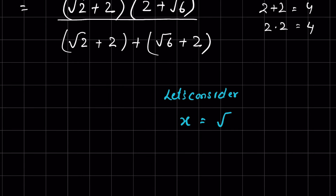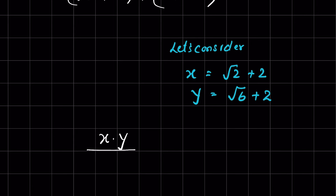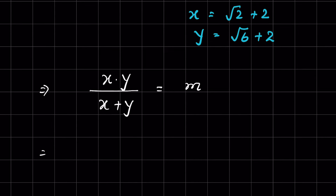So in the denominator we have x times y upon x plus y form. Let this be equal to m, or we can say 1 upon m is equal to x plus y upon x times y.